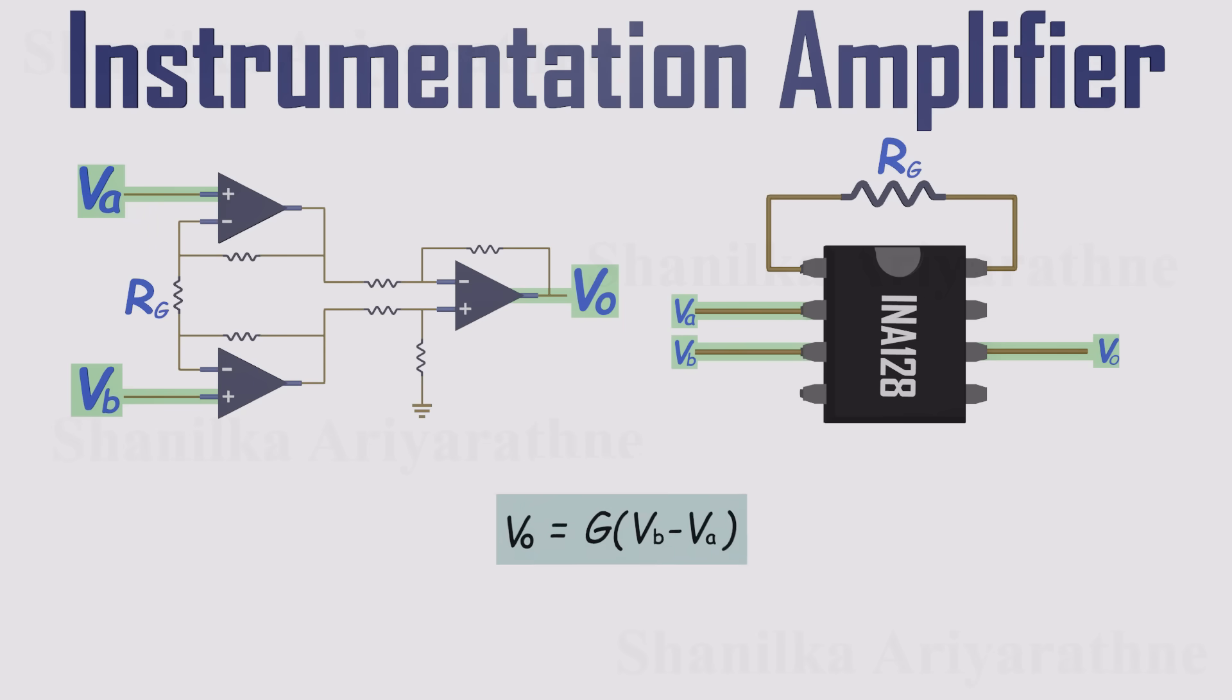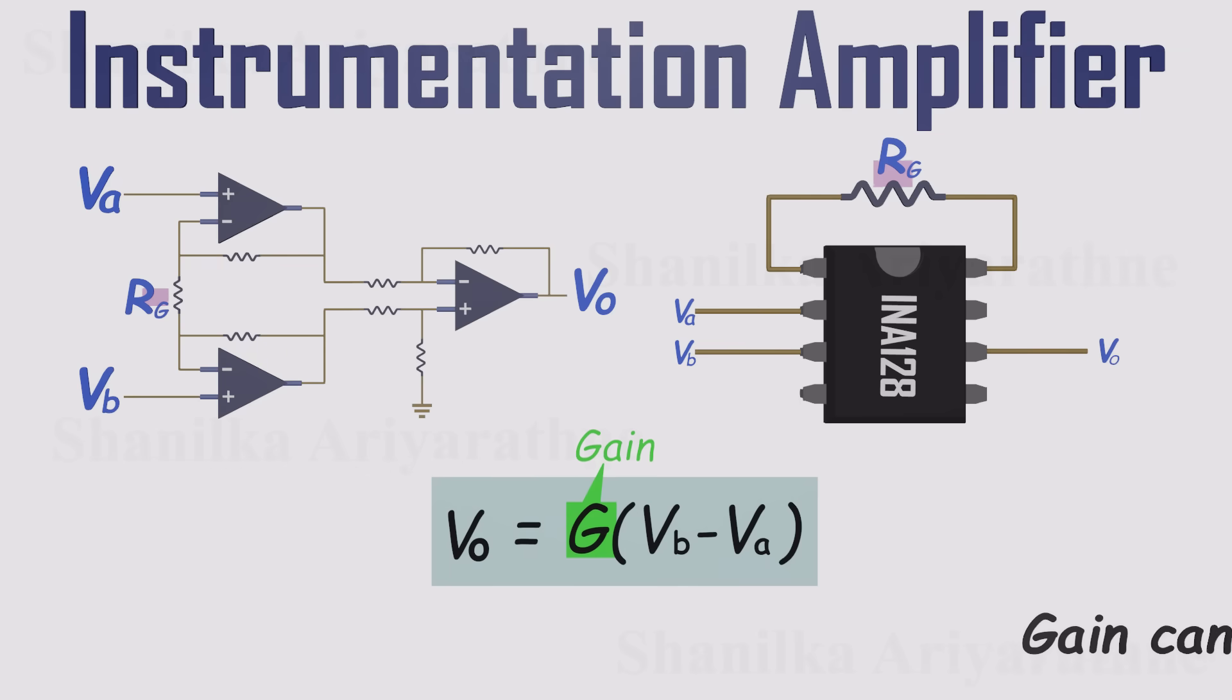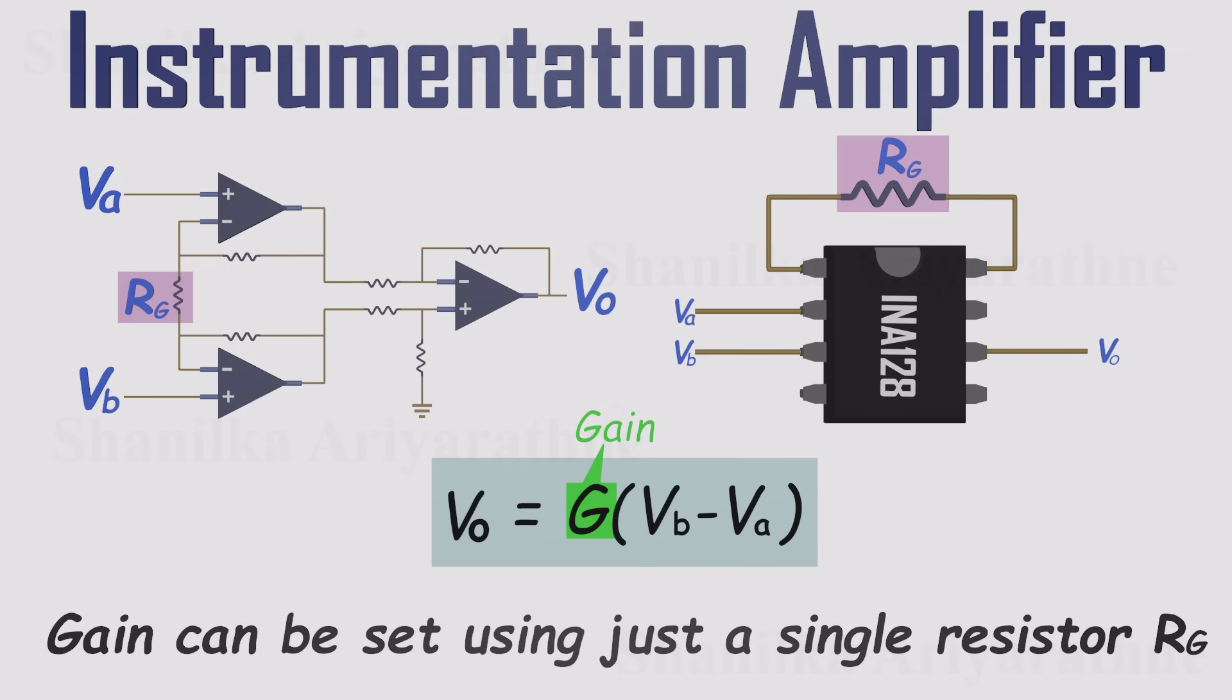When you feed two sensor voltages into an instrumentation amplifier, it amplifies only the difference between them. And the best part? You can set the amplification, or gain, using just a single resistor.